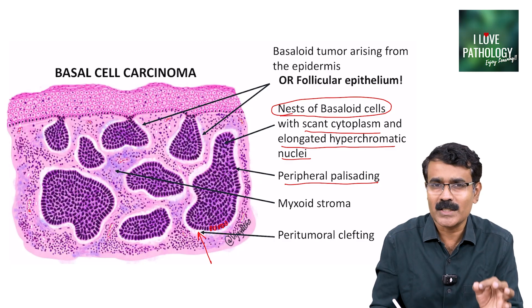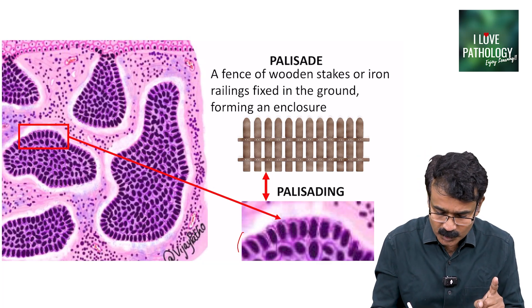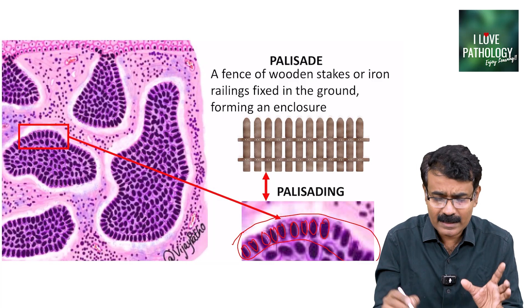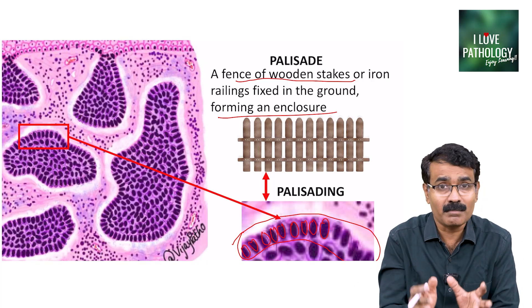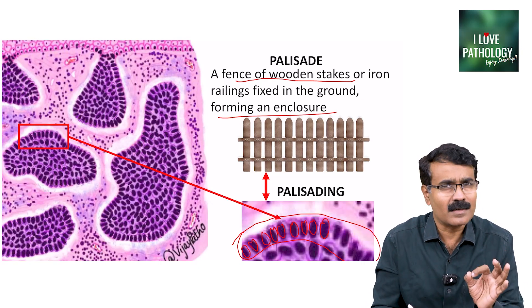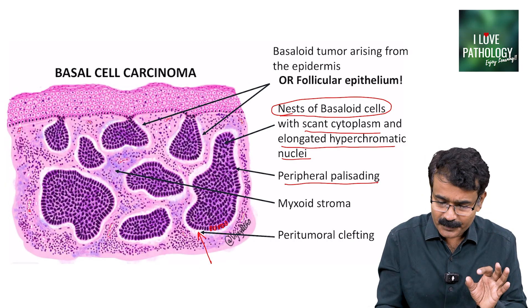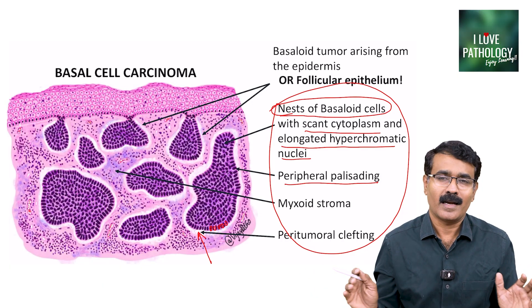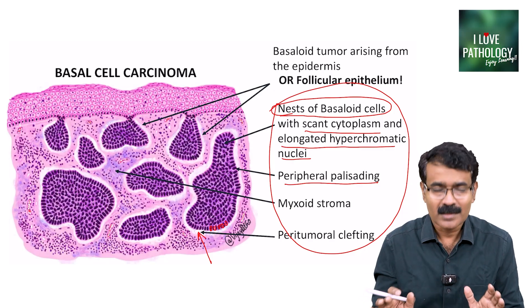Palisading means the nuclei are arranged parallel to one another. A palisade is basically a fence of wooden stakes or iron railings — similarly in basal cell carcinoma, the peripheral cells form an enclosure for the central cells. Remember, basal cell carcinoma is a tumour arising from the epidermis or follicular epithelium, with nests of basaloid cells showing peripheral palisading, extremely scant cytoplasm, and hyperchromatic darkly-stained nuclei.